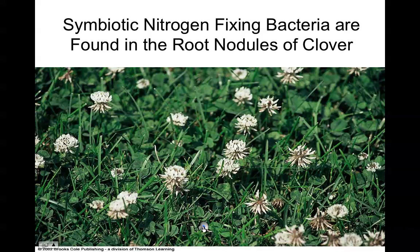Nitrogen-fixing bacteria found in the root nodules of plants called legumes — L-E-G-U-M-E-S — like clover, alfalfa, and peanuts, actually have a close symbiotic relationship with these plants. They provide essentially a source of fertilizer for the plant to use.